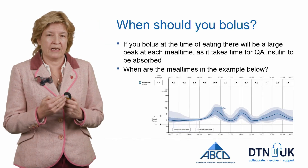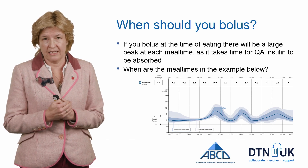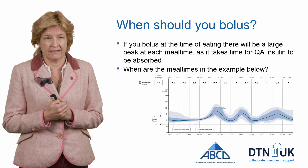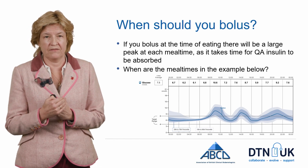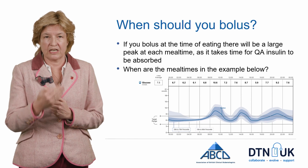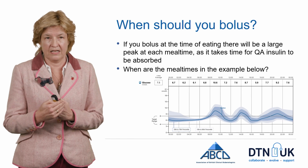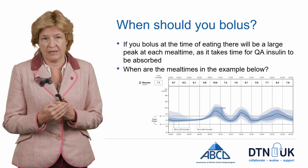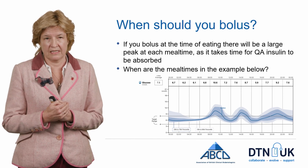The other thing to know about bolus insulin is when you should inject it. This example clearly shows when the user is injecting their bolus insulin and eating. At about seven to eight o'clock in the morning they're having breakfast, injecting their bolus insulin, and it does come back down into range by lunchtime. They then have their lunch and again the glucose rises and comes back down to range by about four o'clock. The timing of the evening meal does vary somewhat in this example.